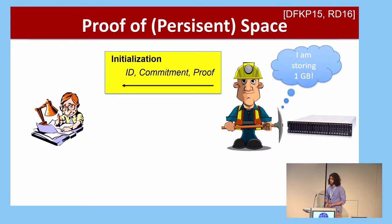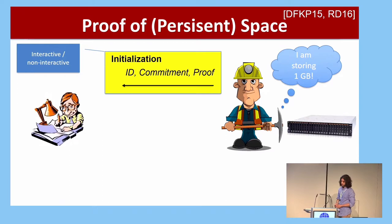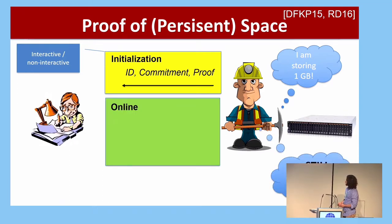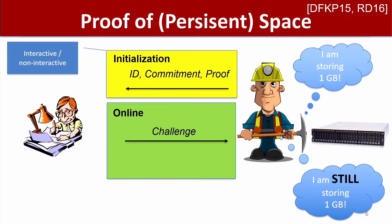Persistent proof of space is divided into two phases: an initialization protocol that looks much like the one just described — either interactive or non-interactive — and then the prover enters an online phase where it fields challenges from the verifier and computes responses that should convince the verifier it is still storing a lot of space. The online phase is seen as separate because it can be much more efficient for the prover to perform, while the initialization phase could require a lot of work.